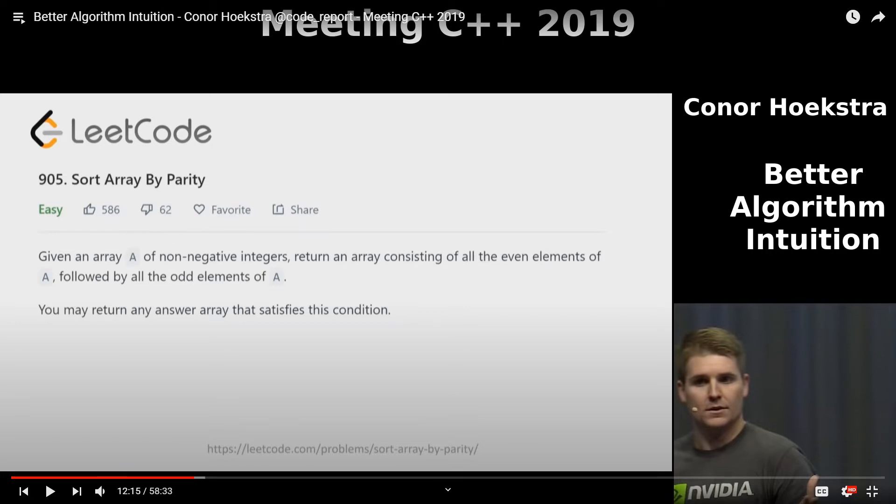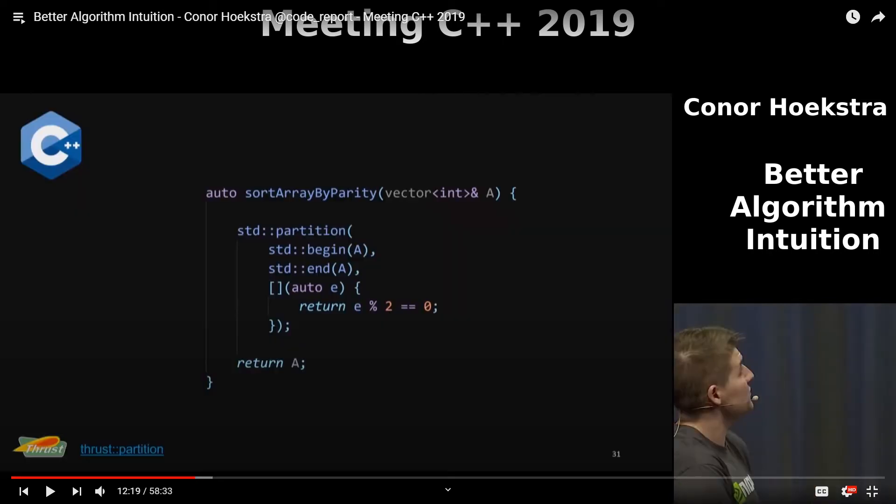And I go on to show that in C++, you can solve this with a single algorithm in the algorithm header called std::partition. So here we've got two iterators defining our range and then a unary function object in the form of a lambda that's just checking, is it even? And if it is, then it's going to put everything at the front. And if it's odd, it's going to go to the back.